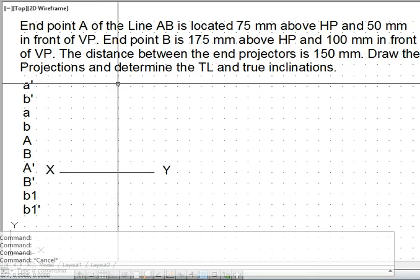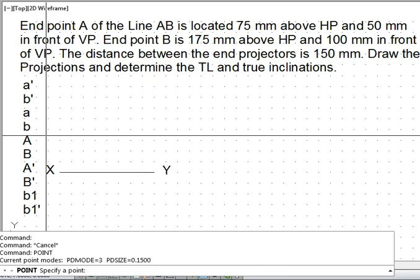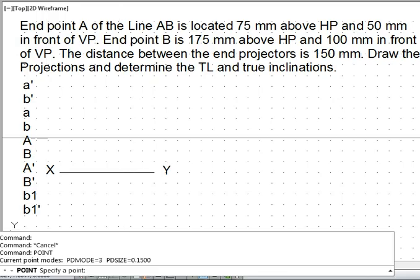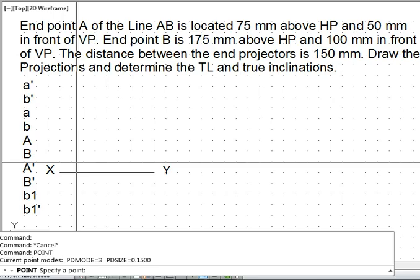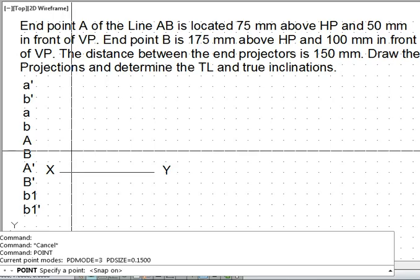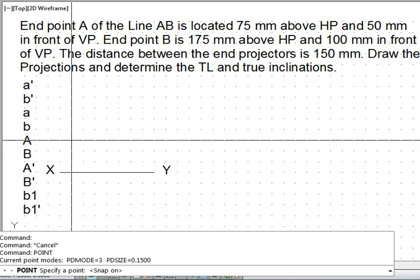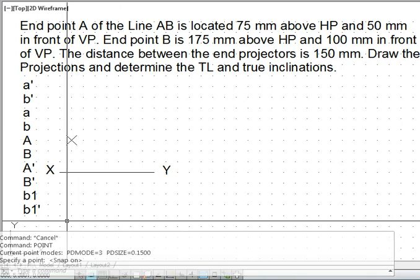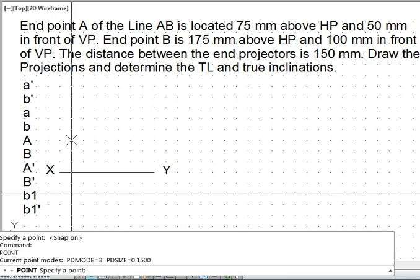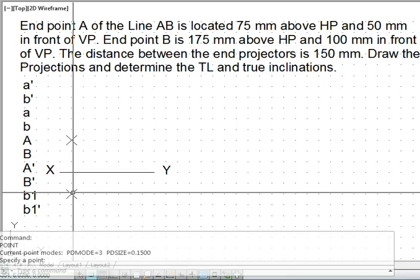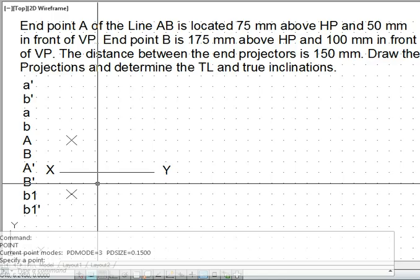Point A we can mark using the simple point command. It is 75 mm above XY line, above HP, that means 75 mm above XY line. Similarly, it is 50 mm in front of VP. In front of VP, that information will be recorded below XY line. In front of VP means it is top view.